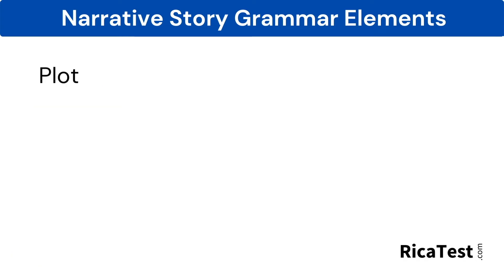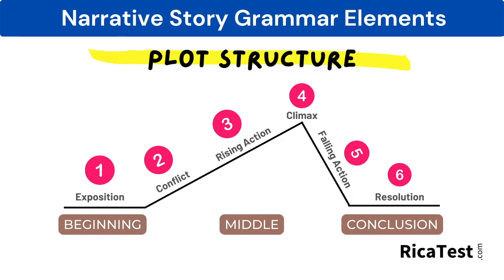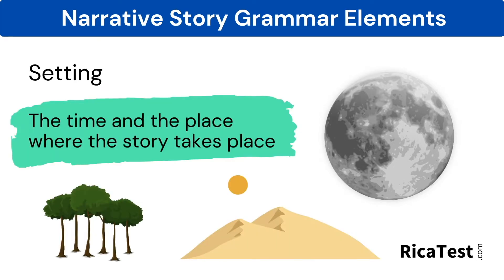The plot is the next narrative grammar point, which is what happens in a story. Specifically, the plot is the sequence of events that happen. The most common plot structure is introduction, conflict, rising action, climax, falling action, and resolution.